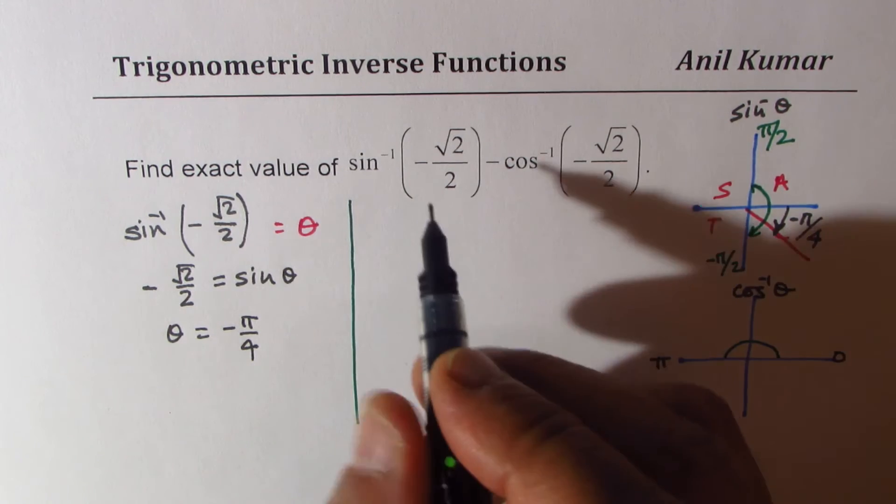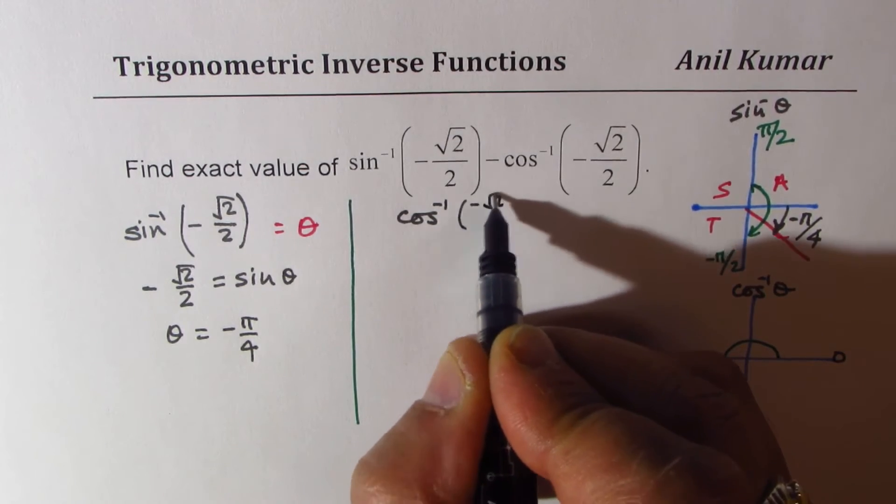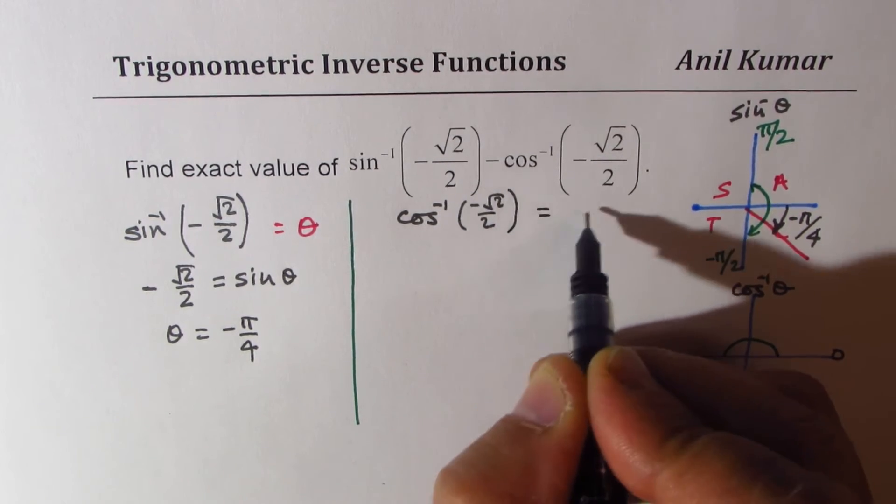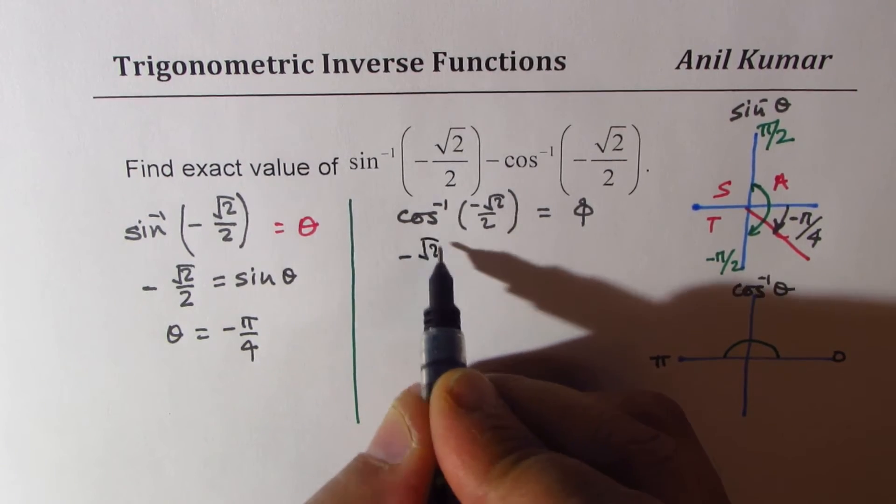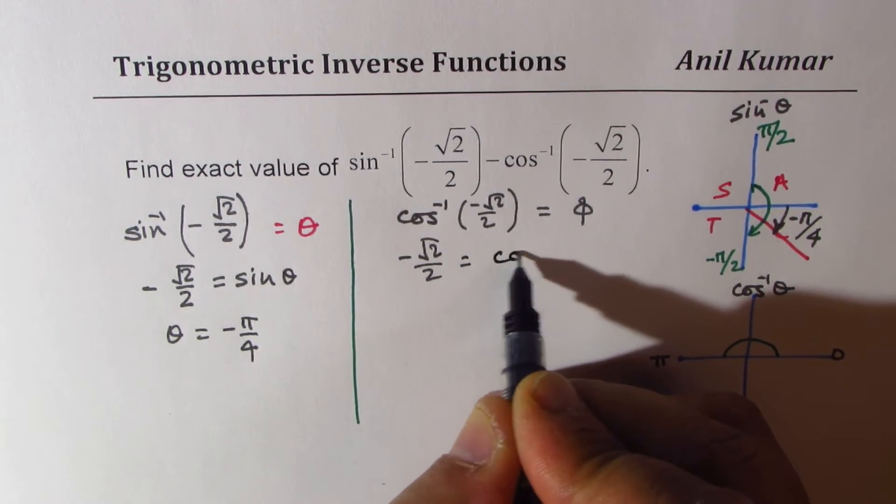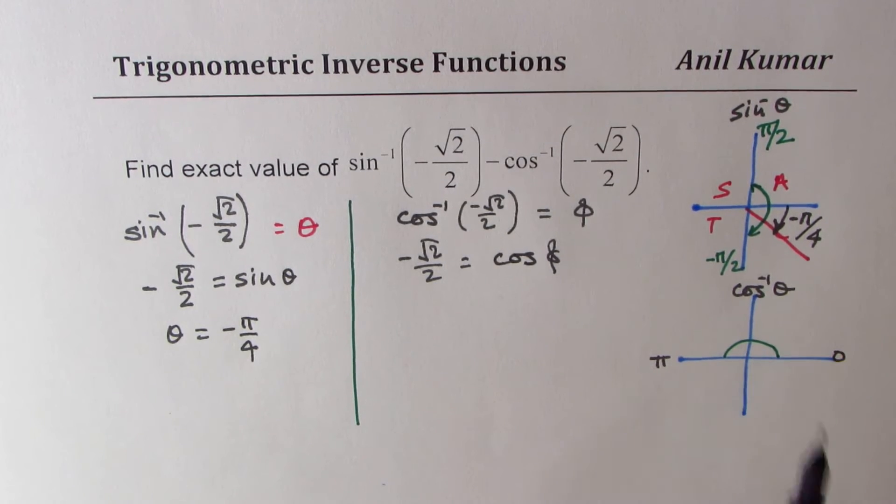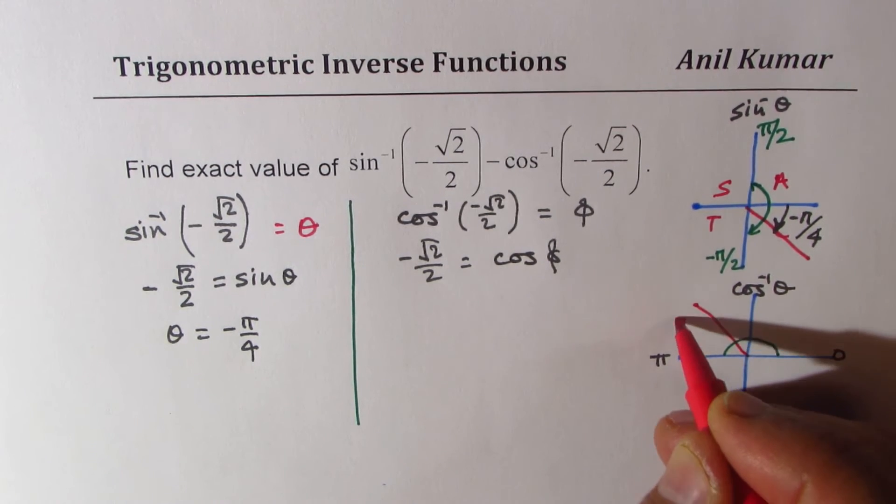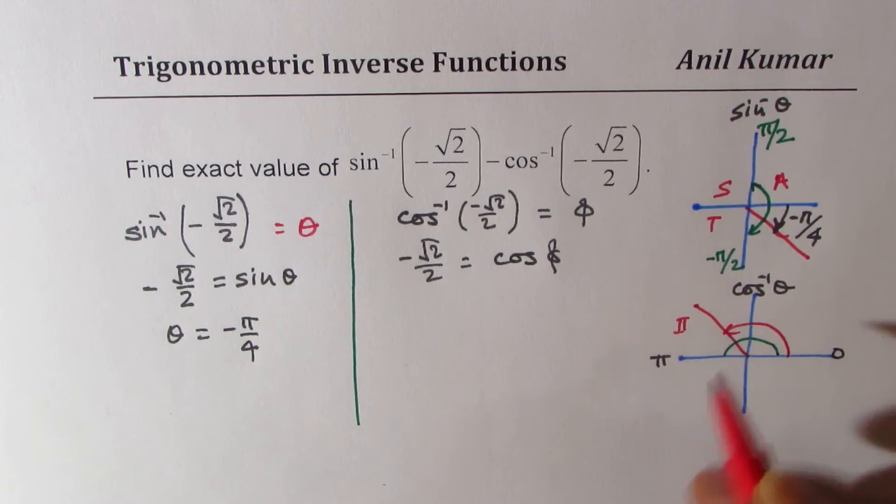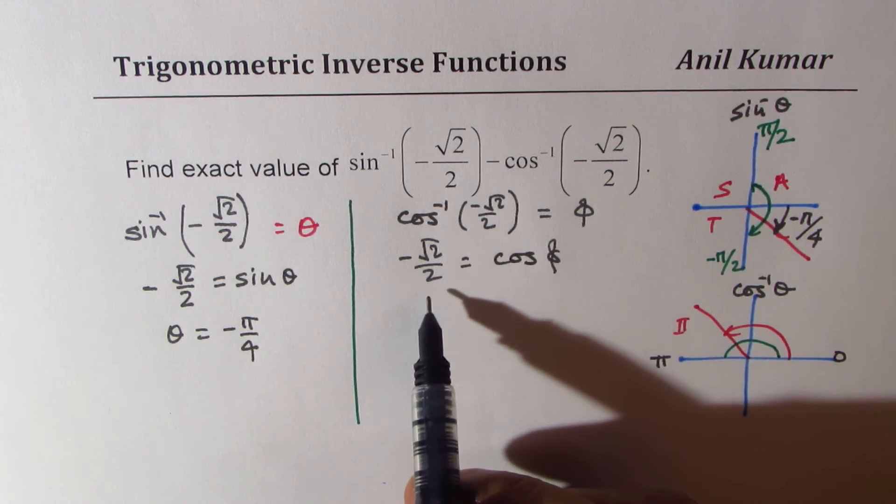Now let's do the same for cos inverse. So what is cos inverse minus square root 2 over 2? Let's say this angle is phi. In that case, minus square root 2 over 2 will be cos phi. We know cos is having this kind of a domain. So this function, we are looking for something in coordinate 2. And this angle...